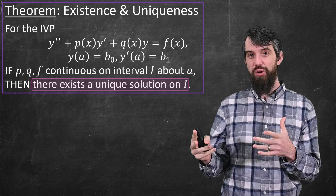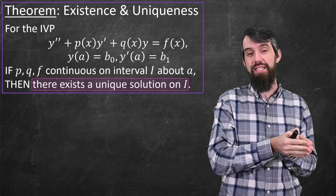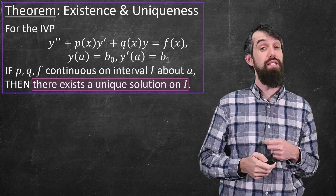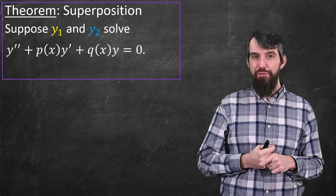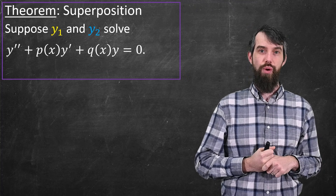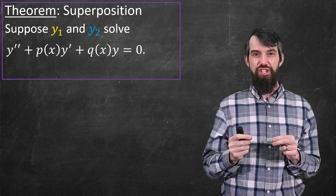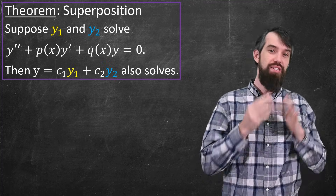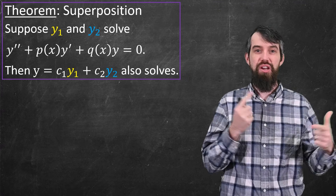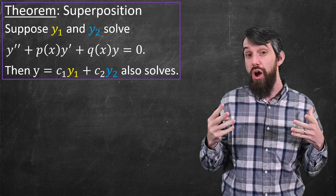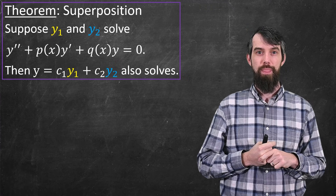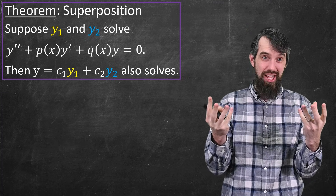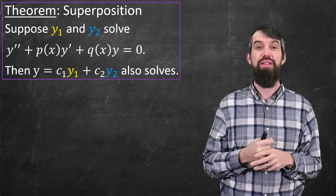Next is something really interesting for second or higher order equations: the principle of superposition. Focusing on a homogeneous linear differential equation where the right-hand side equals zero, if we have two solutions y1 and y2, then any linear combination c1·y1 + c2·y2 for any constants c1 and c2 is also a solution to the original equation.